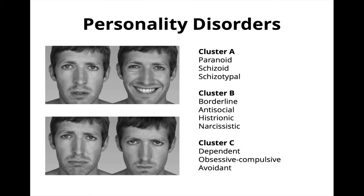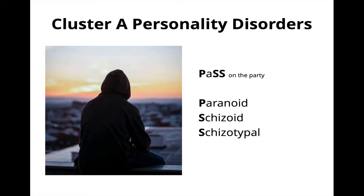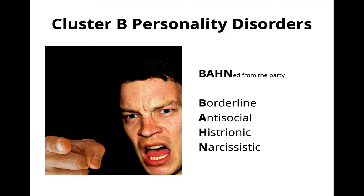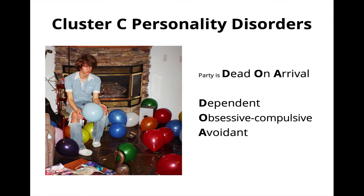For personality disorders, the DSM groups them into three clusters based on superficial similarities. You can remember which disorders fall into each category by thinking about what would happen if you were to invite people from each cluster to a party. Cluster A will pass on the invitation, as people with these disorders tend to shy away from social interaction due to paranoia about other people's intentions, having no desire for interpersonal contact, or feeling discomfort due to odd mannerisms and beliefs. Cluster B will come to the party, but risk being banned for engaging in overly emotional, narcissistic, histrionic, or downright antisocial behavior. Finally, Cluster C will join, but the party will be DOA — dead on arrival — given their tendency to be dependent, obsessive-compulsively perfectionistic, and socially avoidant.